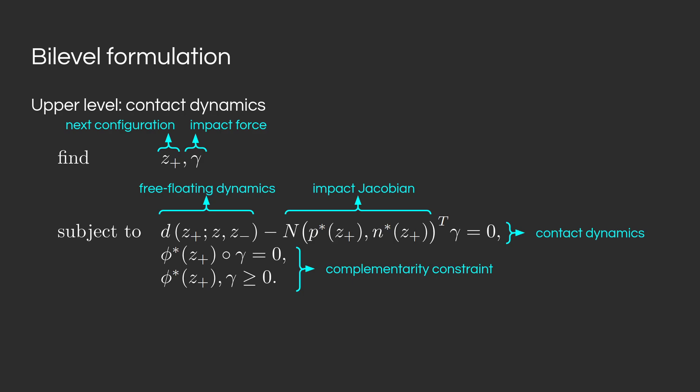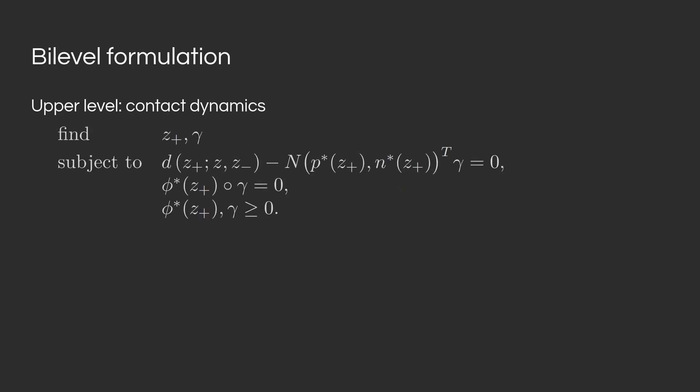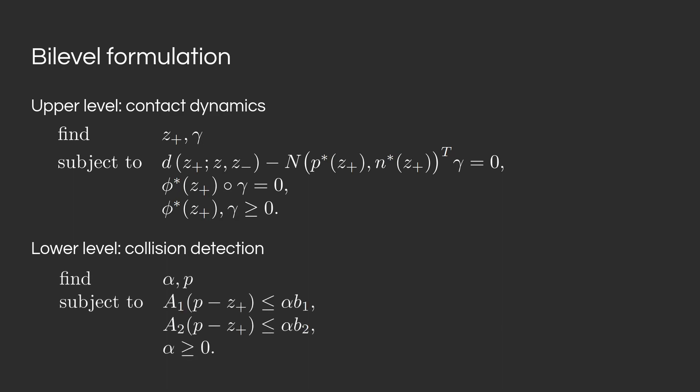The lower-level problem in this bi-level formulation is the collision detection. We solve the same collision detection problem as before, obtaining the signed distance function phi-star, the contact point location P-star, and the contact normal N-star by differentiating the optimization problem. This formulation is very simple and appealing; however, it can break in certain scenarios.